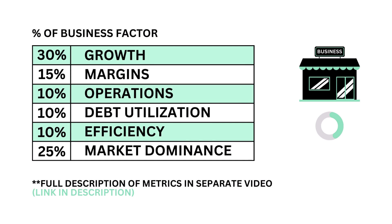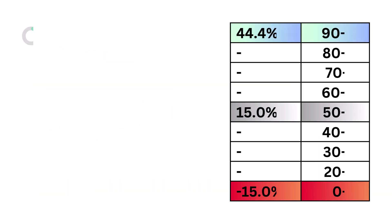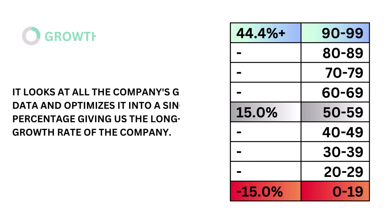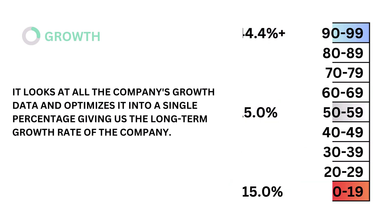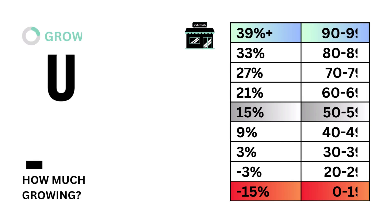Each metric is weighted based on importance to the business. First, growth. Growth looks at all the company's growth data and optimizes it into a single percentage, giving us the long-term growth rate of the company. The models tell us that a growth rate of 15% is considered average. Here's our growth grade.